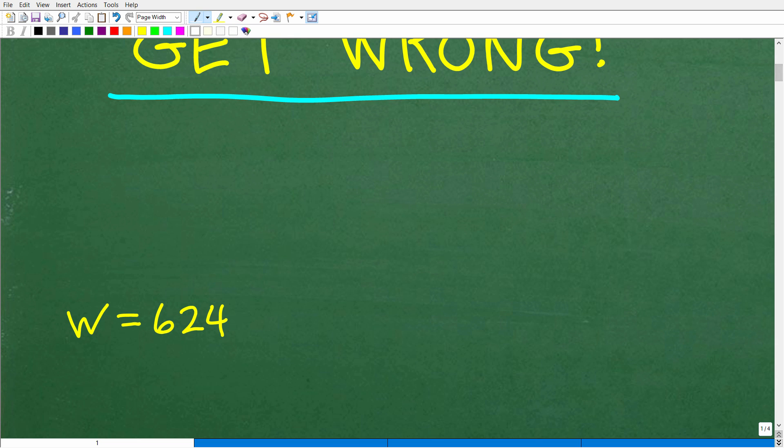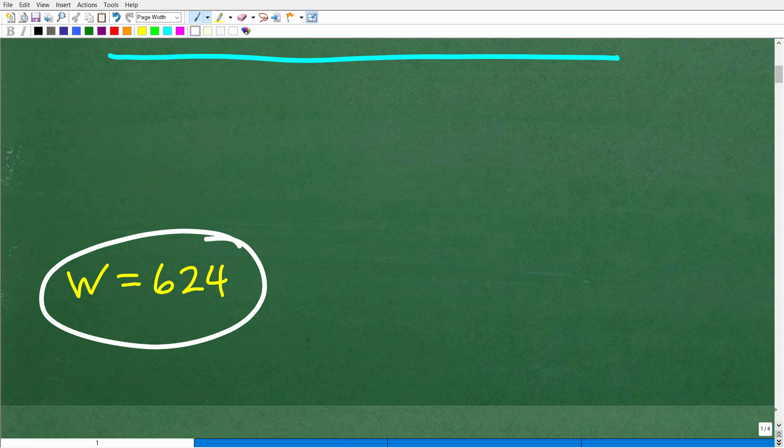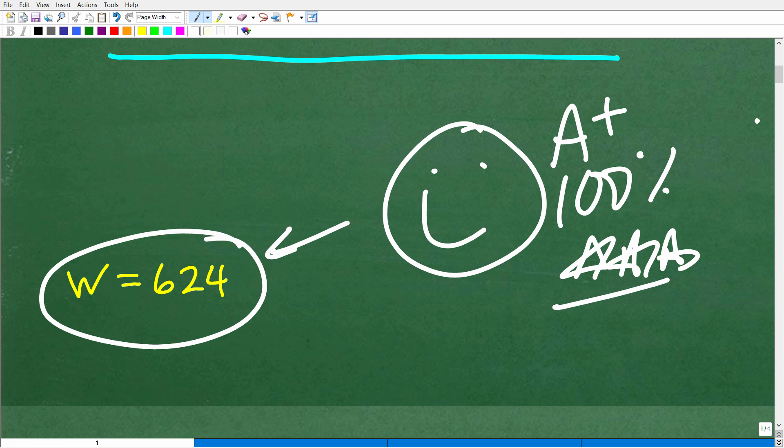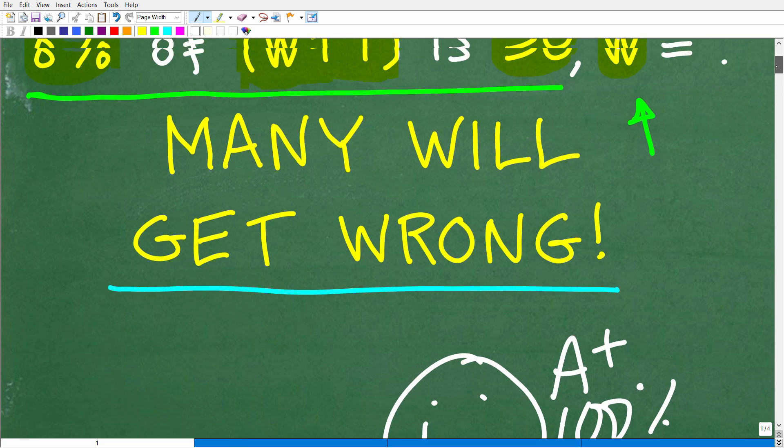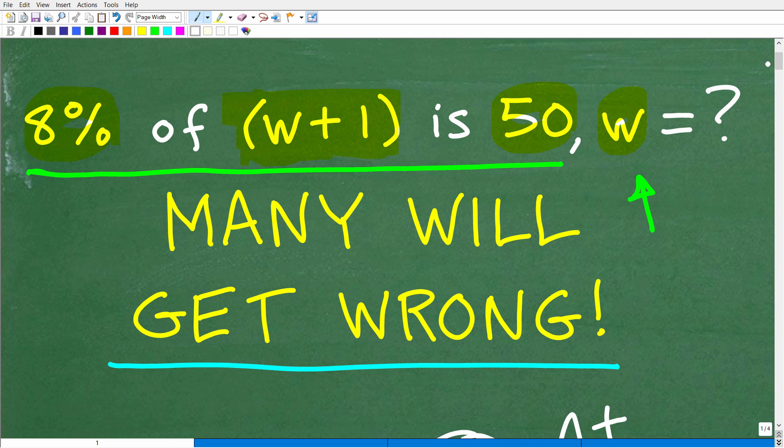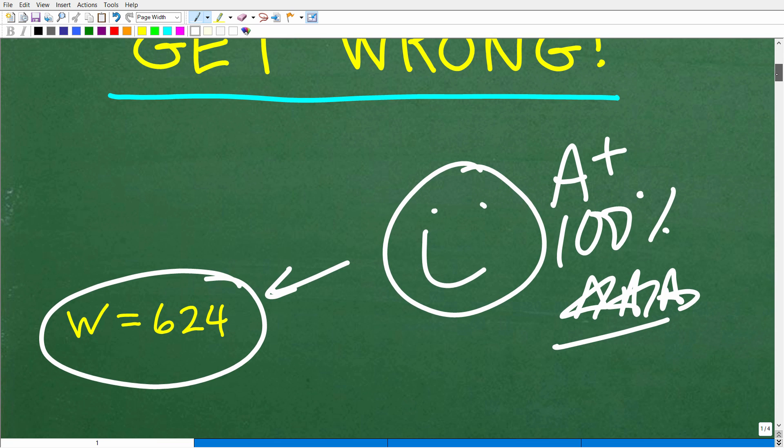w is equal to 624. All right, so that's the answer. Now, how did you do? Well, if you got this right, even if you didn't use algebra, if you figured this out, that is great. Let's go ahead and give you a nice little happy face and A+ 100% and multiple stars. So you can brag to your friends and family that indeed you are still a certified professional expert in the area of percent.